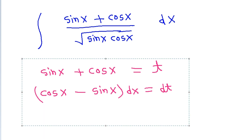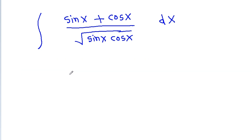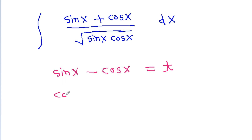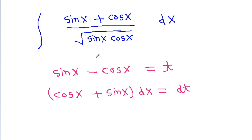So, if I take sin x minus cos x as t, then we get cos x plus sin x dx equal to dt. And we have sin x plus cos x into dx. So now we also need to change sin x into cos x — that is, express sin x·cos x in terms of sin x minus cos x, or t.